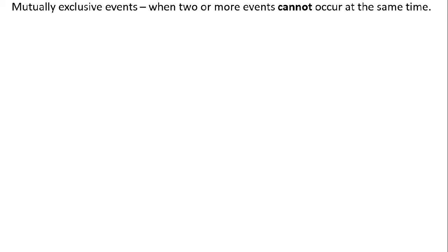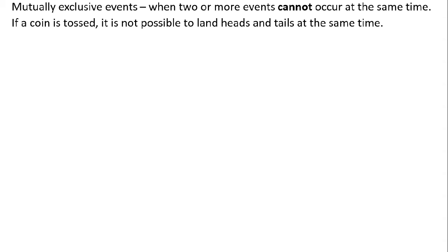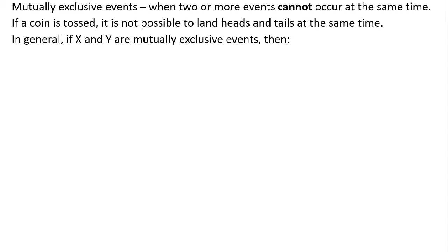Mutually exclusive events: when two or more events cannot occur at the same time. If a coin is tossed, it is not possible to land heads and tails at the same time. In general, if X and Y are mutually exclusive events, then the probability of X or Y is equal to the probability of X plus the probability of Y.